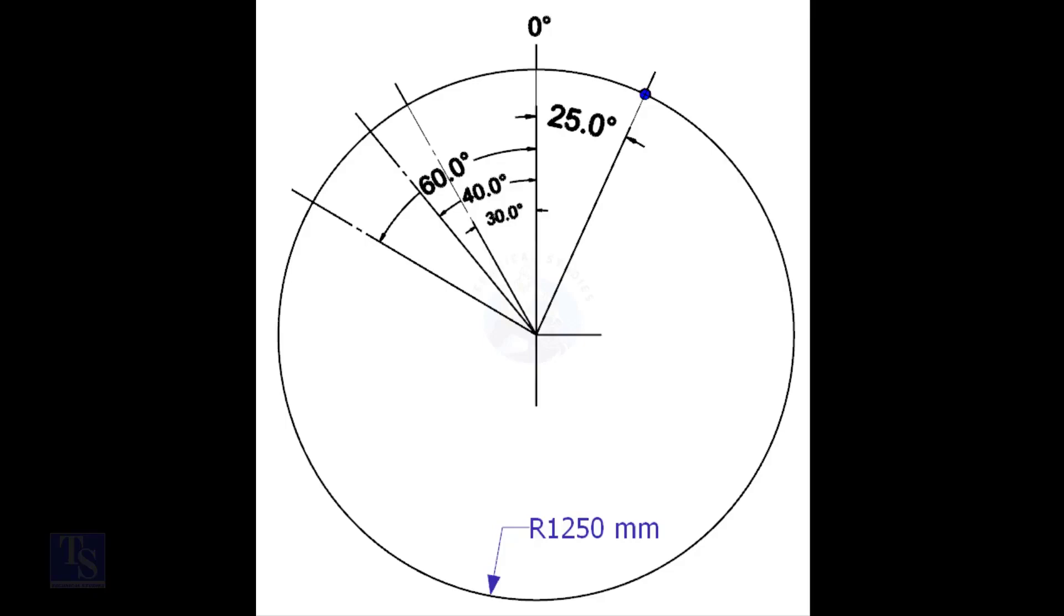Mark the zero-degree line. As per the drawing, zero-degree is rotated 25-degree anticlockwise from the center of the weld joint.